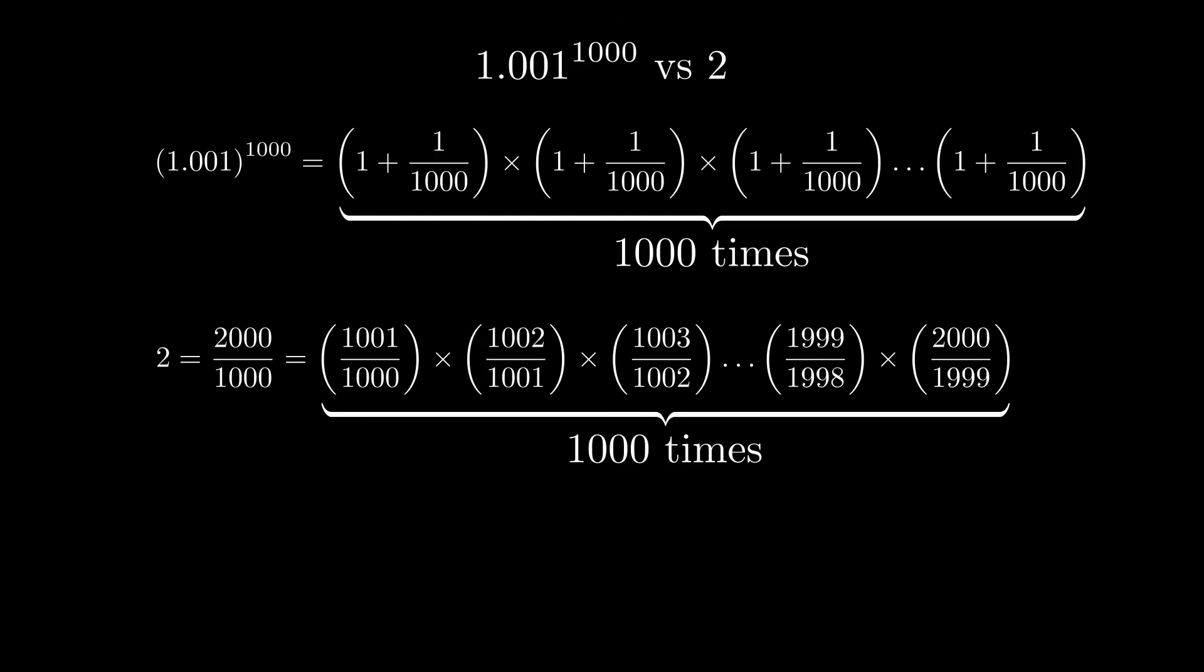You'll notice that we could cancel the 1,001 over 1,001, the 1,002 over the 1,002, and so on all the way down until the end. We would just be left with 2,000 over 1,000, which is 2. And so this is a very fancy way of writing 2.